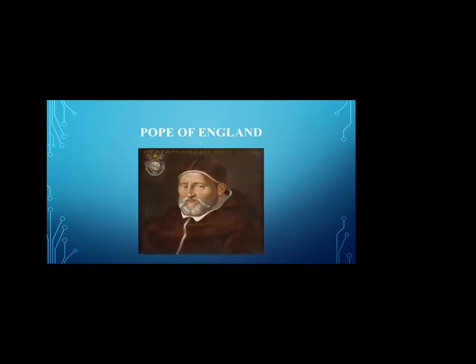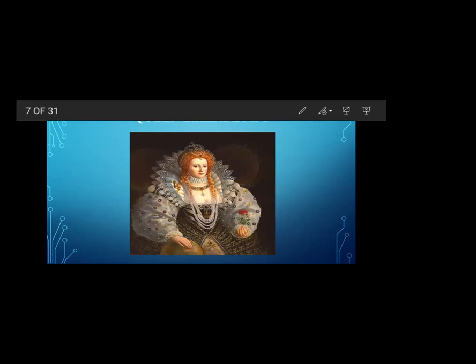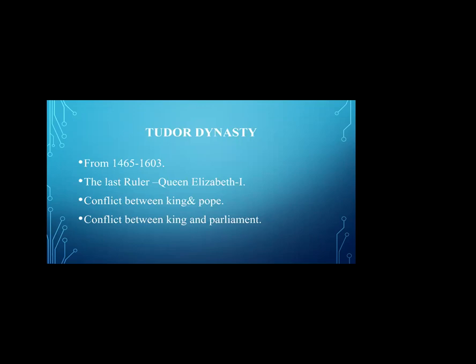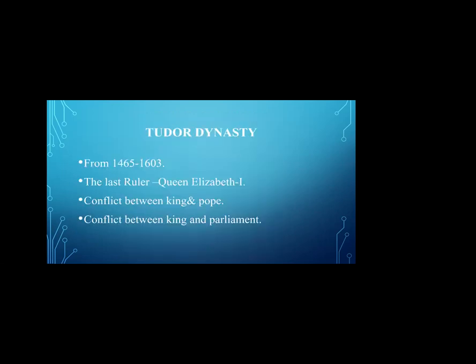Now let's discuss England. At early stages in England, kings were ruling. The first dynasty is the Tudor dynasty. The Tudor dynasty ruled from 1465 to 1603. The last ruler of this Tudor dynasty was Queen Elizabeth. During this dynasty's rule, a conflict between the king and the pope started.